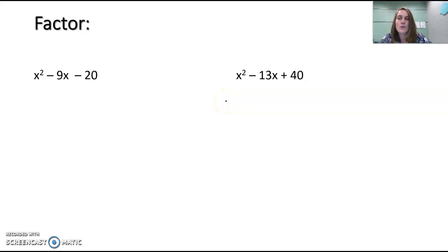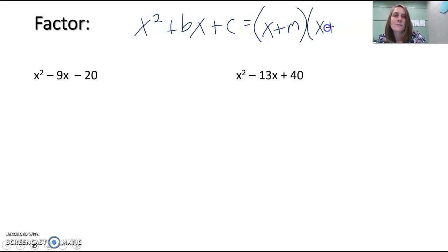We have two trinomials here to factor in that standard form: x² + bx + c. When we factor, we get (x + m)(x + n), where m times n equals c (the constant) and m plus n equals b (the linear coefficient).